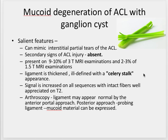So what are the salient features? It can mimic an interstitial partial tear of the anterior cruciate ligament, but all the secondary signs of ACL injury are absent here. We have not seen any bony contusions, no meniscal tears, no buckling of the PCL. Usually this condition is more easily identified on 3 Tesla MR examinations than on 1.5 Tesla MR examinations.